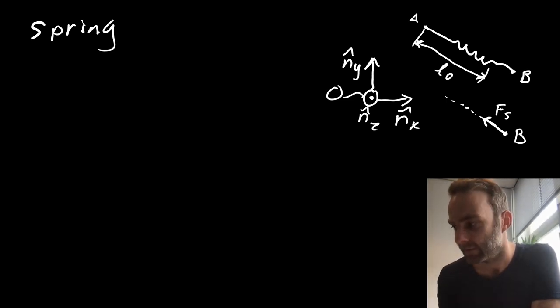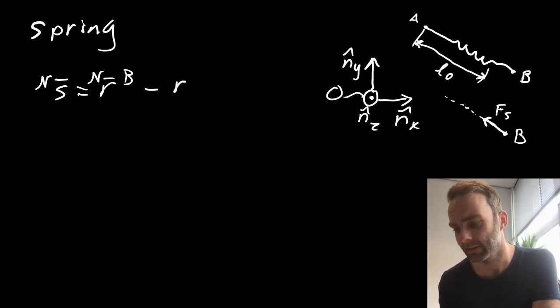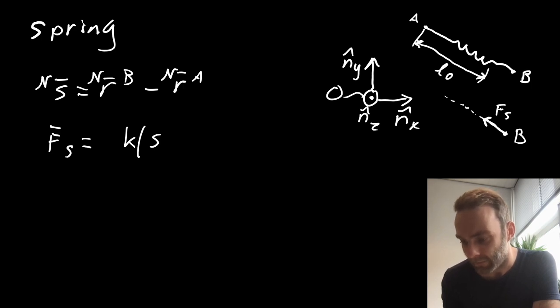Now, to get an expression for the spring force, we first find a vector that lies in the direction of the spring. So in this case, I choose the position vector of B and subtract the position vector of A from that. And I call that vector S. And to find the vector of the spring force, we first determine its magnitude, which is K times the magnitude of that S vector minus L0. So this is the elongation of the spring, times the spring constant K.